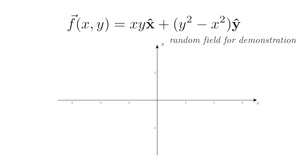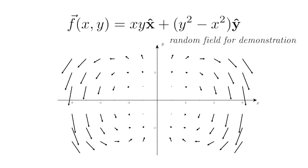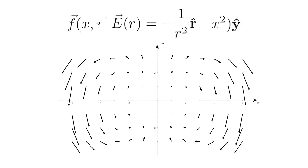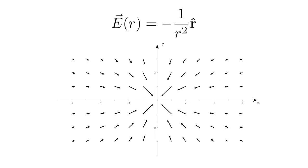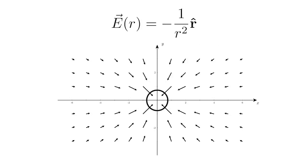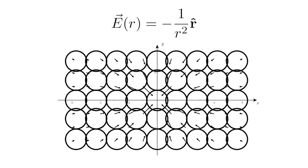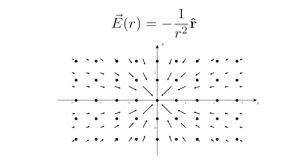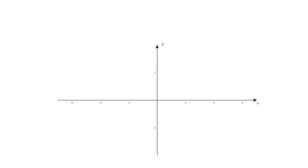For example, one equation would render a particular vector field, and another equation — one over r squared — will result in a different field. Taking the divergence means that everywhere in this field we measure how much is flowing in or out, not in a big area but in an infinitely small sphere or point. After taking the divergence, every point of space has a number associated with it measuring how much of the vector is flowing in or out.